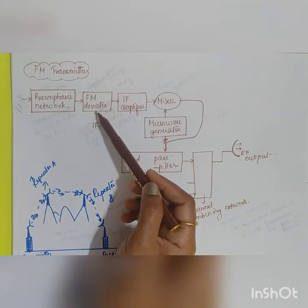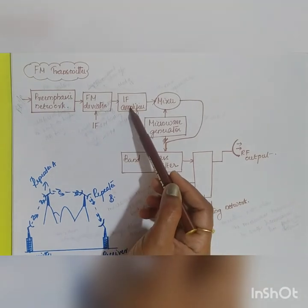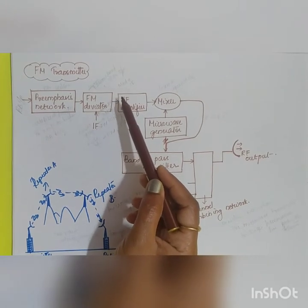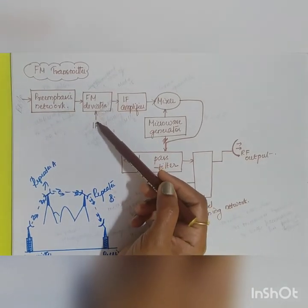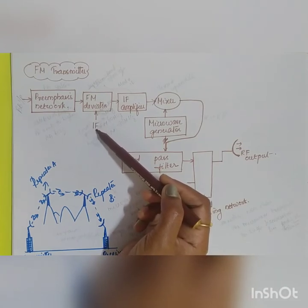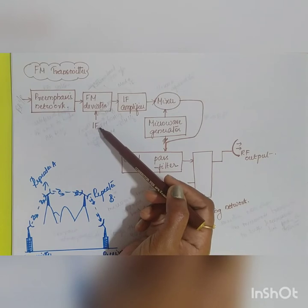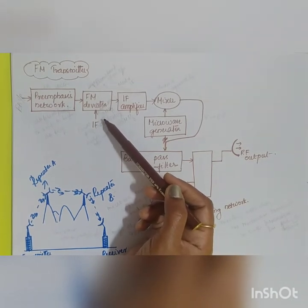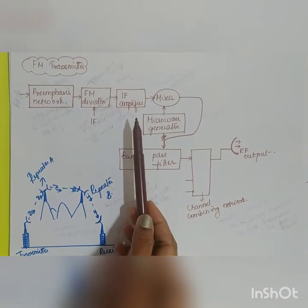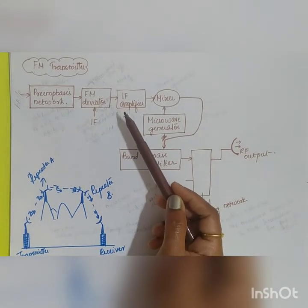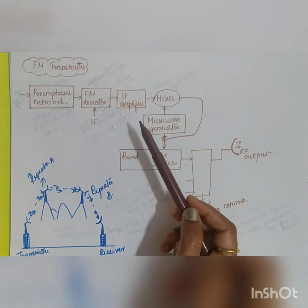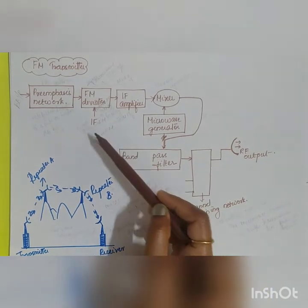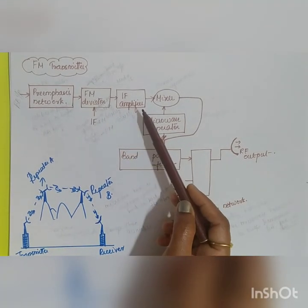The amplified signal is given to the FM deviator. The FM deviator and the IF amplifier together form the modulator circuit, also known as the narrow band FM modulator. The carrier frequency is the intermediate frequency (IF), which normally ranges from 60 MHz to 80 MHz, with a commonly used value of 70 MHz. In the FM deviator, low frequencies are frequency modulated and high frequencies are phase modulated, ensuring a better signal-to-noise ratio throughout the frequency range.